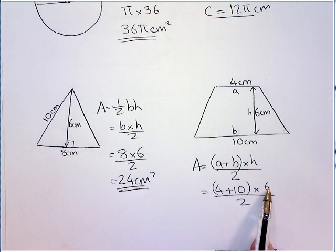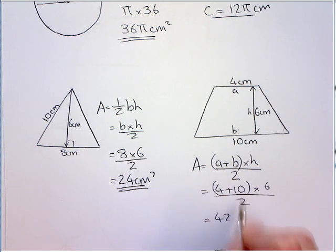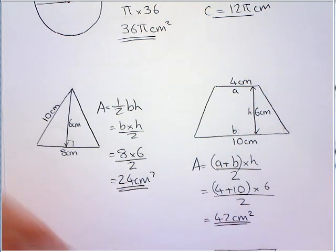14 times 6 is 84, halved is 42. So, you can do a little bit more working in there. That's it.